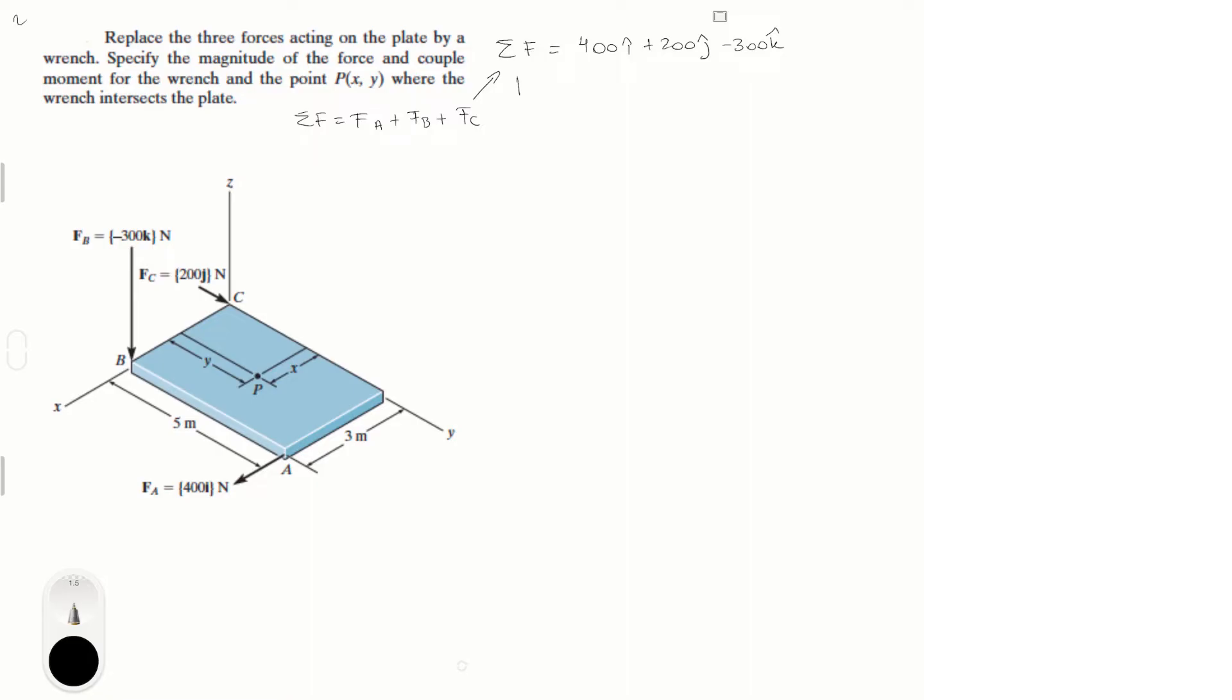The next thing you need to do is find the magnitude of that force, which is found by doing 400 squared plus 200 squared plus 300 squared, all square rooted. And this is equal to 538.52 newtons.